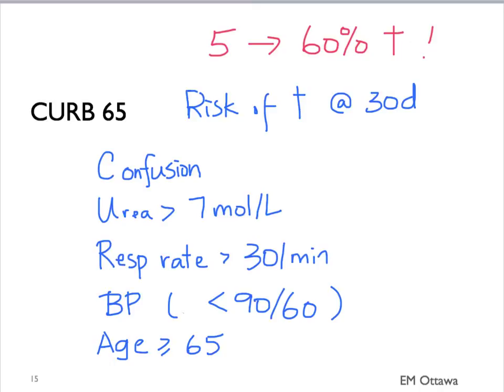For patients with a score of 0 to 1, they are usually treated as an outpatient. A patient with a score of 4 to 5 needs hospitalization. They might need the ICU.